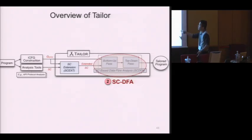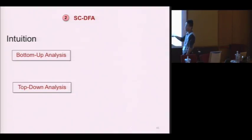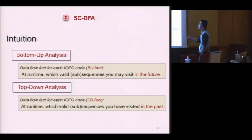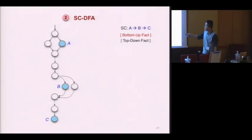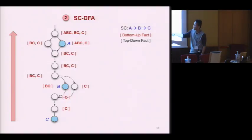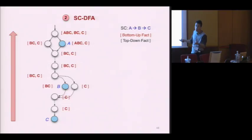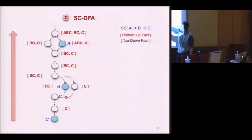The IC-based dataflow analysis consists of two parts: bottom-up analysis and top-down analysis. Intuitively, for each node in the bottom-up analysis, the bottom-up facts tell you what sub-sequences you may visit in the future, and the top-down facts tell you what sequence you have visited in the past. For example, with sequential criteria A, B, C, bottom-up analysis starts from the last program point C and stops at the entry. For a given node, it may visit sub-sequence C in the future, or B, C through one path, or C through another path.